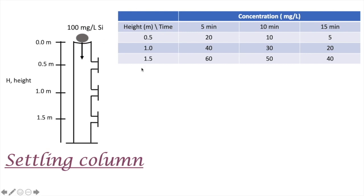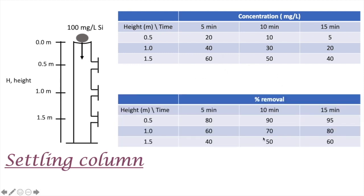The next task is to get the percentage removal. We know that we start with 100 milligram per liter, and the concentration after five minutes at height 0.5 meters is 20 milligram per liter — that means 80 percent has been removed. The formula is: (100 minus 20) divided by 100, times 100 percent, which gives 80 percent.